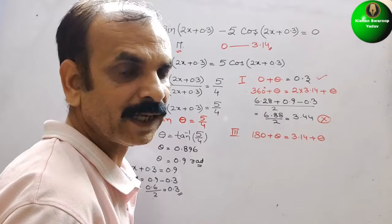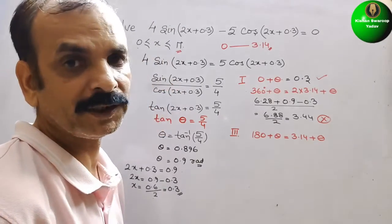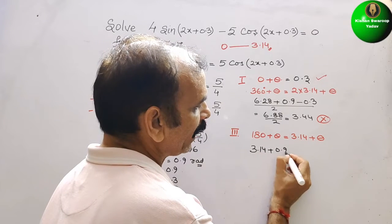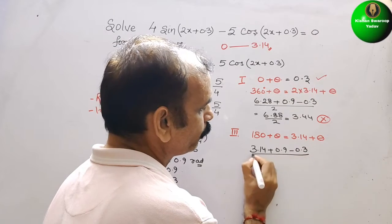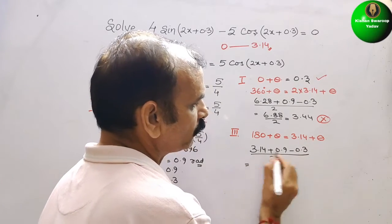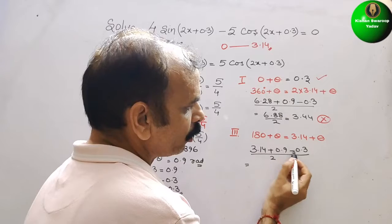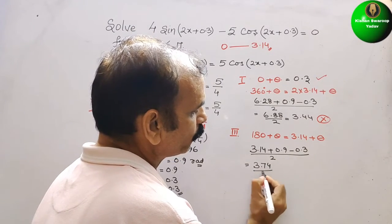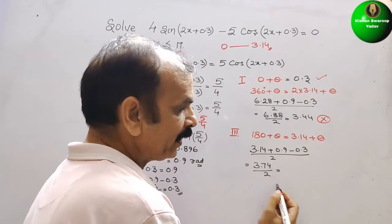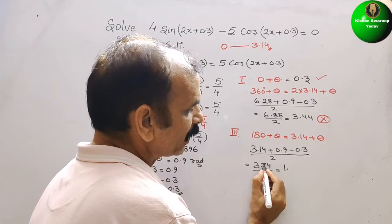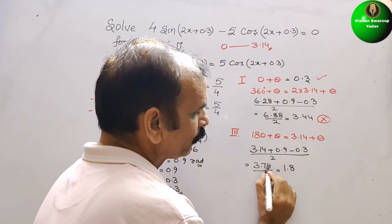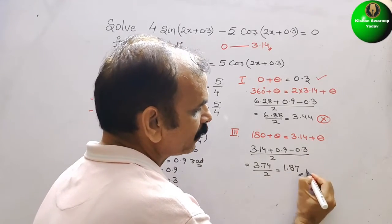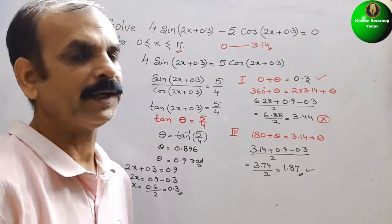For the third quadrant: 180° + theta = 3.14 + 0.9 − 0.3, all divided by 2. This simplifies to 3.14 + 0.6 = 3.74, divided by 2 = 1.87. So the second solution is x ≈ 1.87.